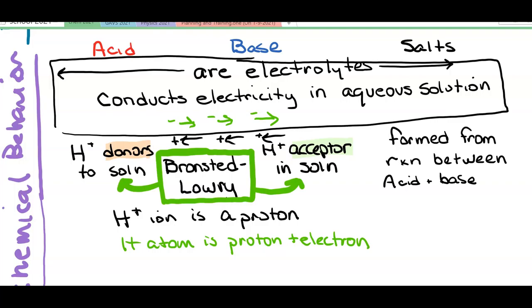The Bronsted-Lowry profile of an acid and a base didn't include anything for salts. But what they did know is that salts are formed when an acid reacts with a base. And that's usually called a neutralization reaction.